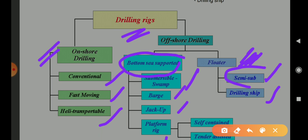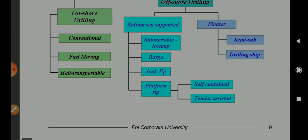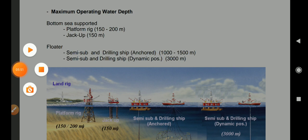The floater type consists of semi-submersible and drill ships. Semi-submersible is a very interesting one. I have heard about it but have not worked on it — I worked on the island rig. The information we discussed above is the same as what is shown here.